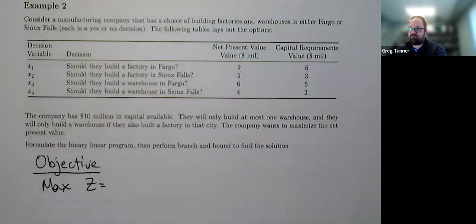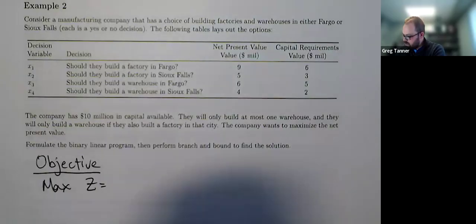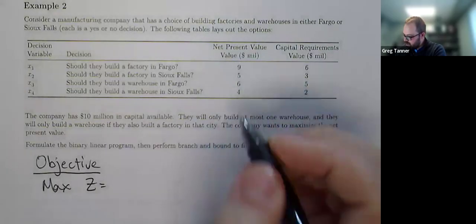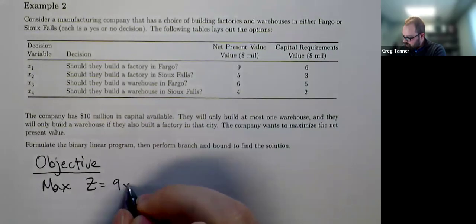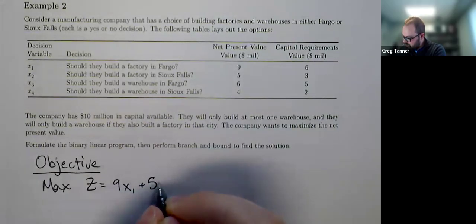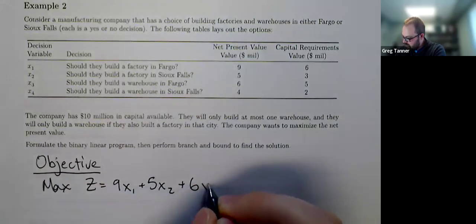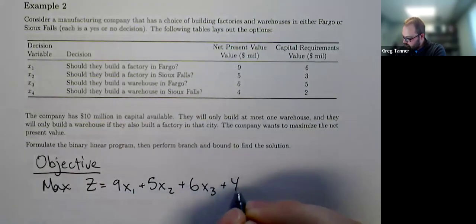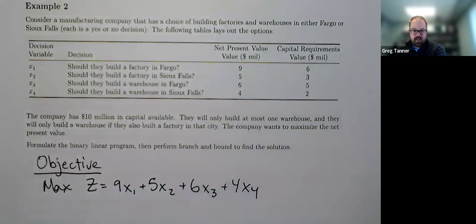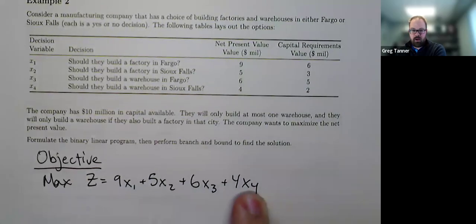We can't do part of a factory. And so our objective is going to be 9x1 + 5x2 + 6x3 + 4x4, knowing that some of these will have zero as their value and some will have one. But the combination of which are zero and which are one is going to be what maximizes this objective.